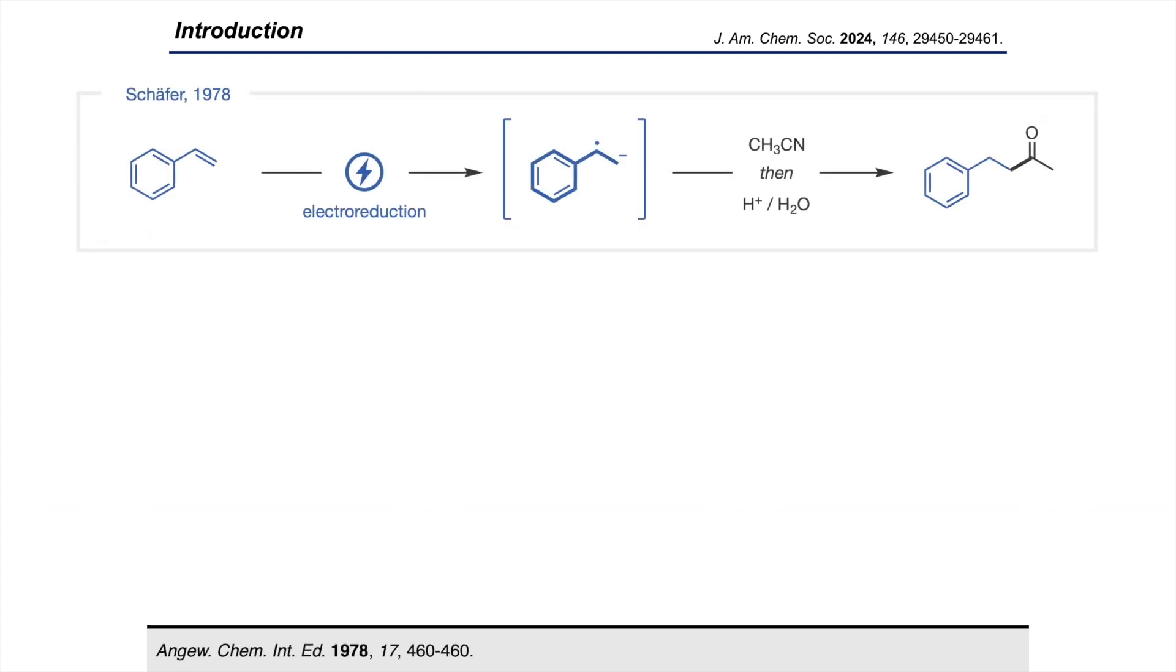Schaeffer showed that these reactive radical anion intermediates generated from styrene were sufficiently nucleophilic to react even with weakly electrophilic solvents like DMF or acetonitrile. But the super harsh electrochemical conditions at the time gave rise to numerous side reactions, indiscriminate regioselectivity, uncontrollable double additions, and even dimerization.